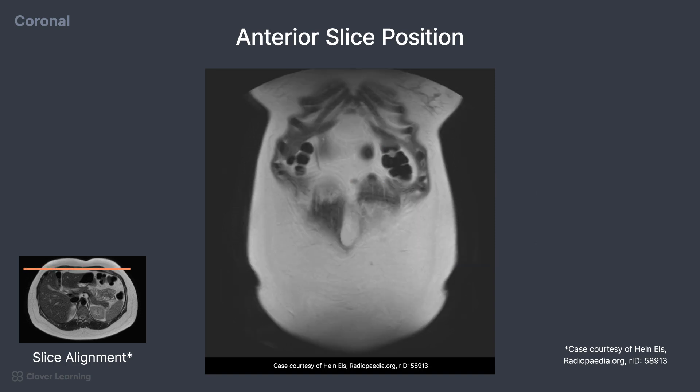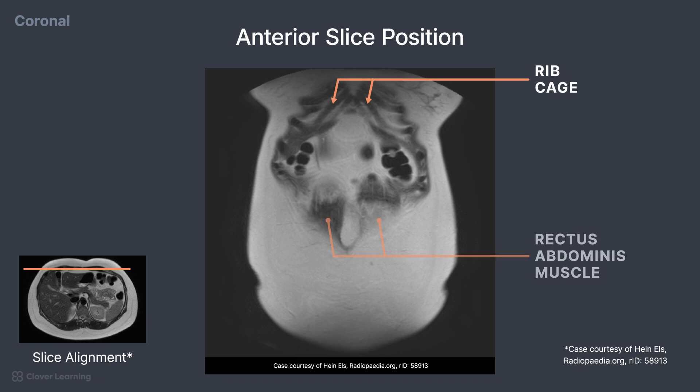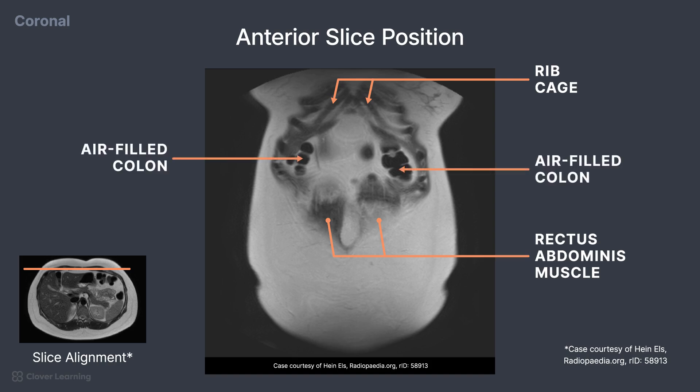we can again see portions of the ribs. Towards the center of the image, the rectus abdominis muscle is demonstrated just underneath the subcutaneous fat. On the corners of the rib cage, the dark circular areas are portions of the air-filled colon.